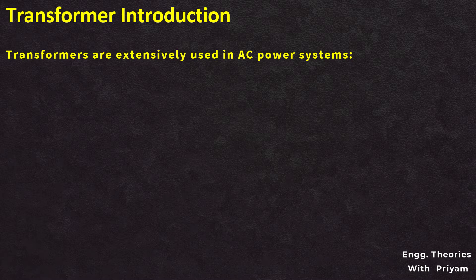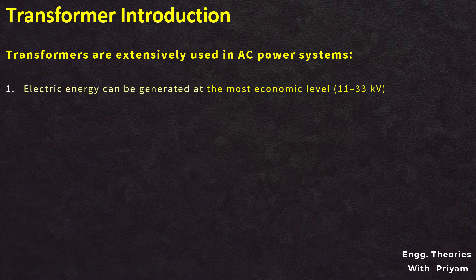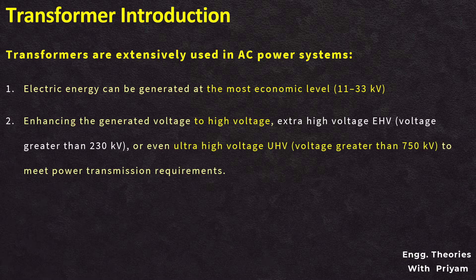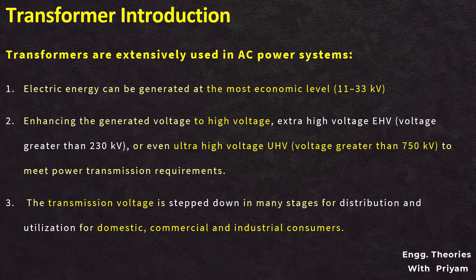Transformers can immediately step up the voltage at the side of power generation before transmission and distribution takes place. They are extensively used in power systems because electrical energy can be generated at the most economic level — from 11 to 33 kilovolts — and then the generated voltage is enhanced to extra high voltage (EHV, greater than 230 kV) or even ultra-high voltage (UHV, greater than 750 kV) to meet power transmission requirements, reducing losses and enhancing transmission capacity.